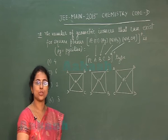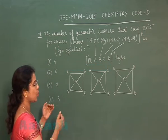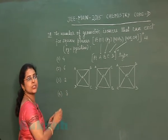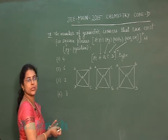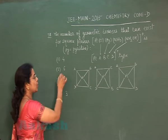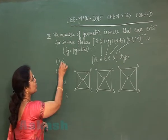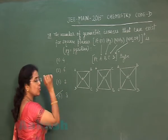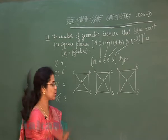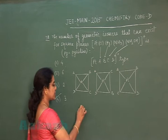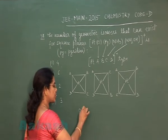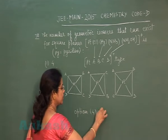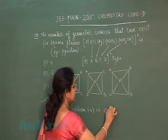They are only known as geometric isomers. So according to the question, the correct answer is 3 geometric isomers. Checking the options: first option incorrect, second incorrect, third incorrect, and fourth option is correct. So the correct option is option 4.